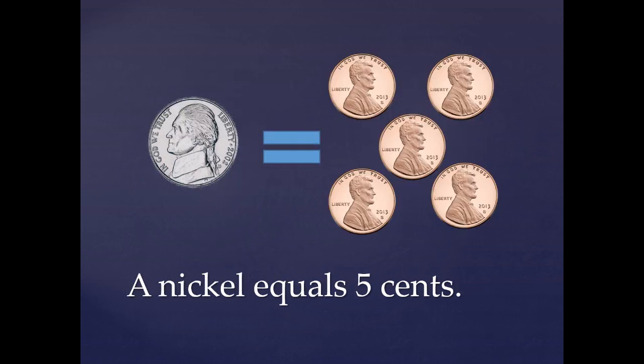A nickel equals five cents. I have five pennies here, because pennies are all worth one cent. And if we have five pennies, we could trade them in for a nickel. Let's count them together. One, two, three, four, five. A nickel equals five cents.